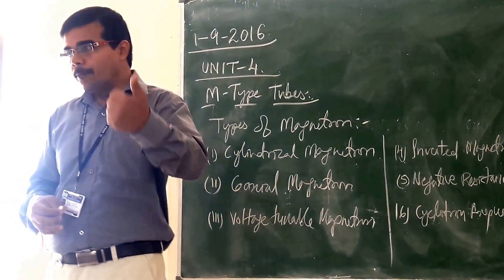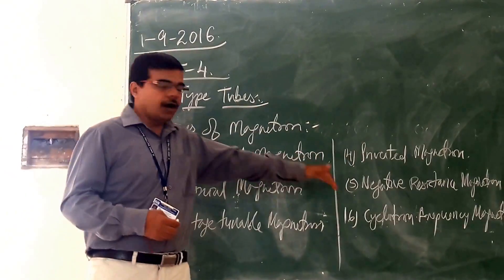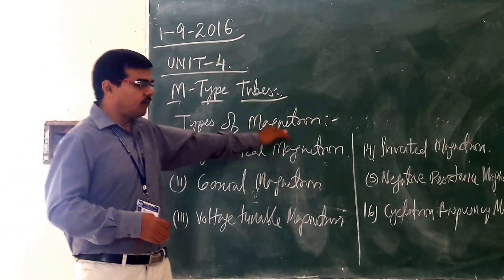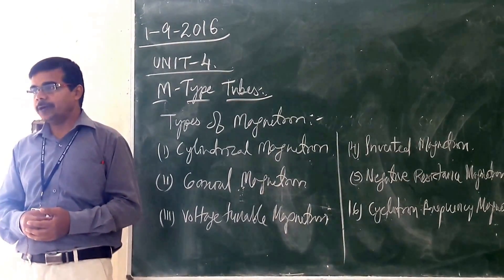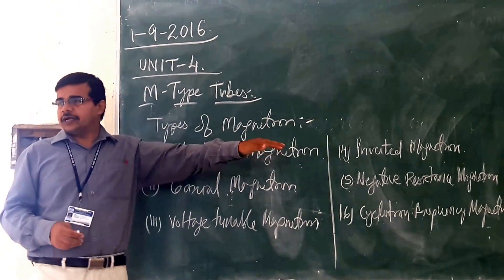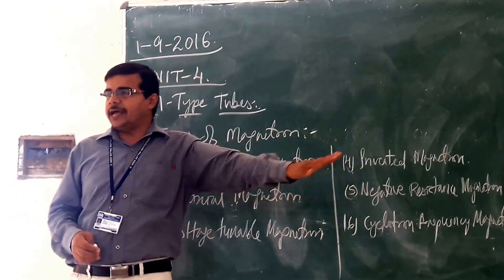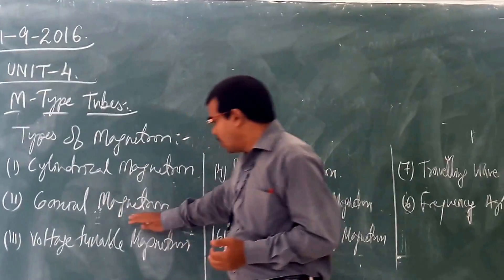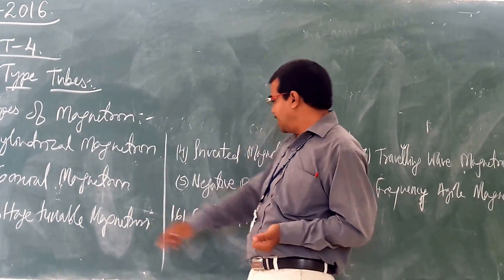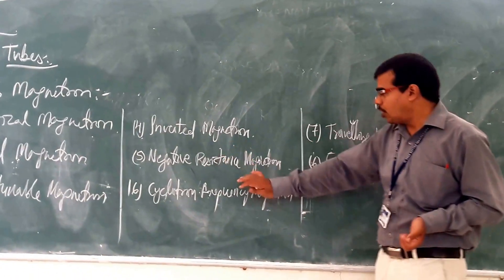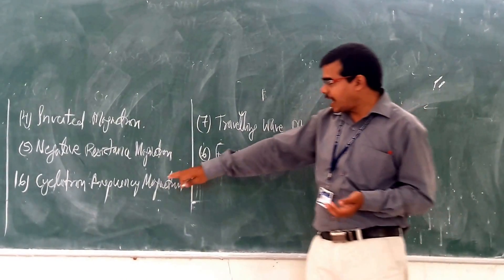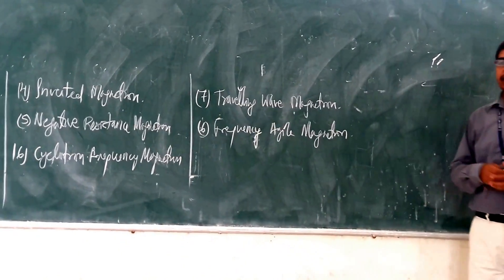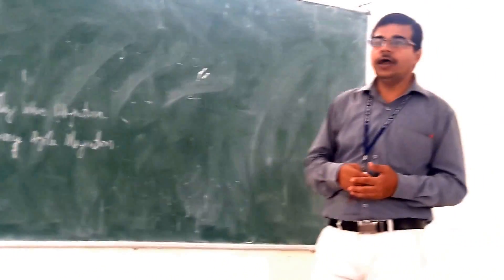So, the magnetron has more efficiency and more output power, which is why we prefer the magnetron oscillator. The types of magnetron include: cylindrical magnetron, coaxial magnetron, voltage-tuned magnetron, inverted magnetron, negative resistance magnetron, cyclotron frequency magnetron, and negative resistance frequency magnetron.